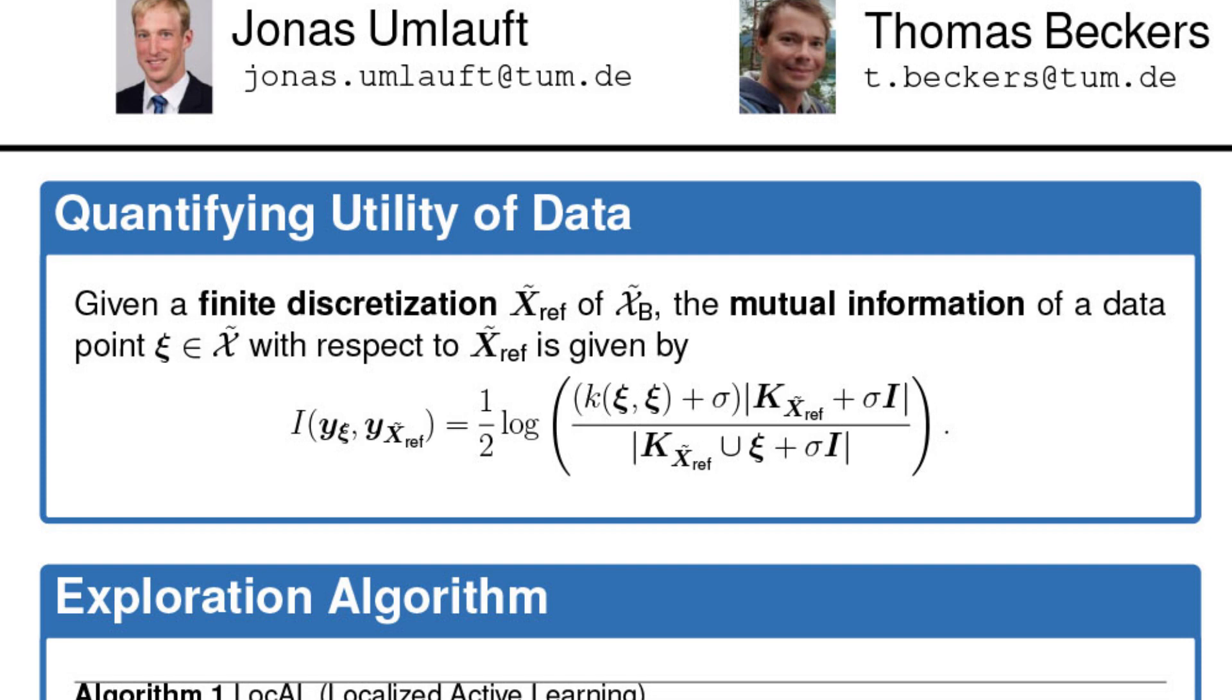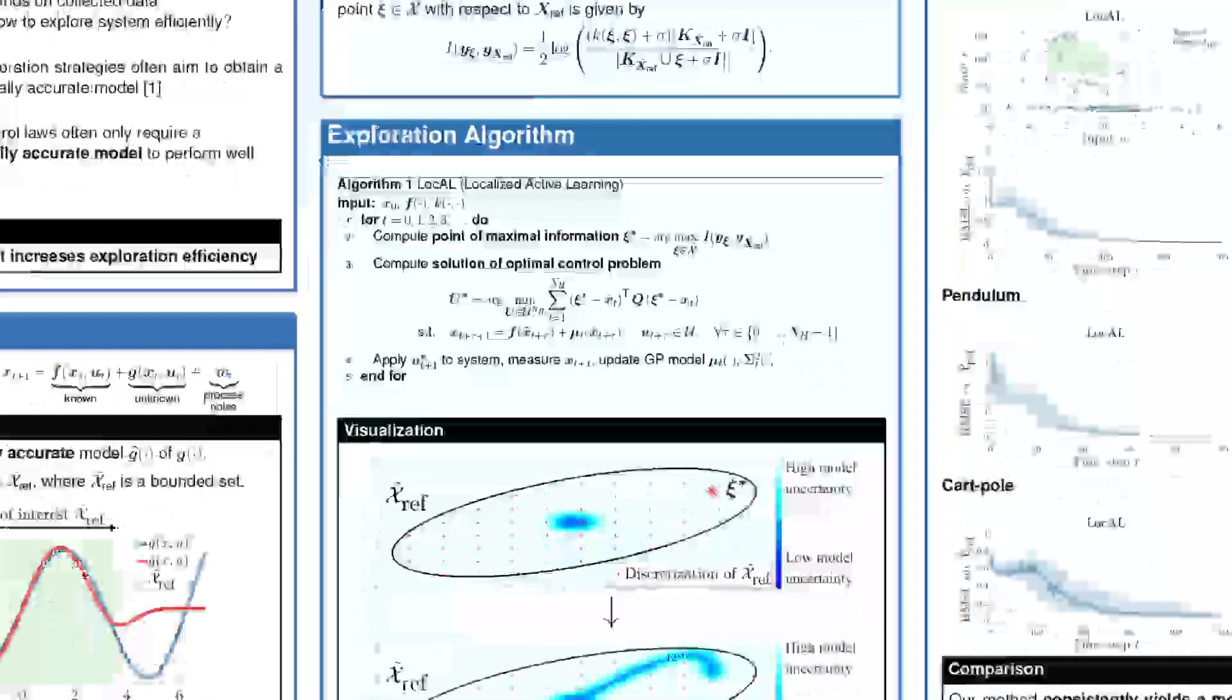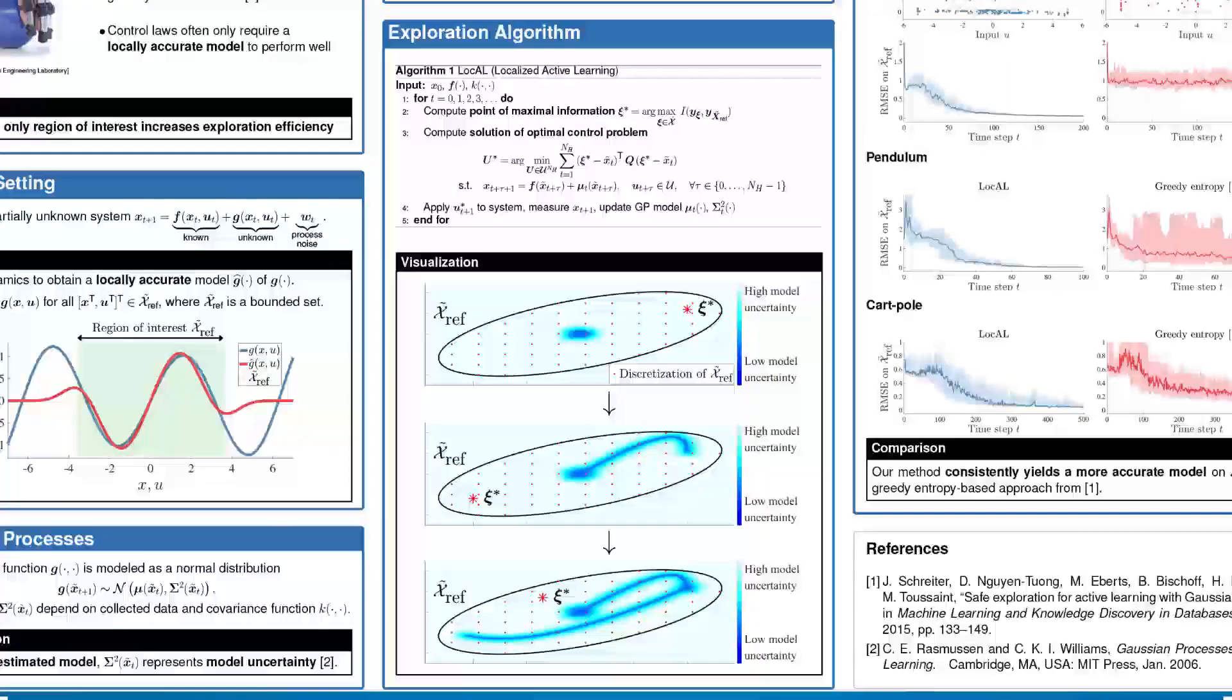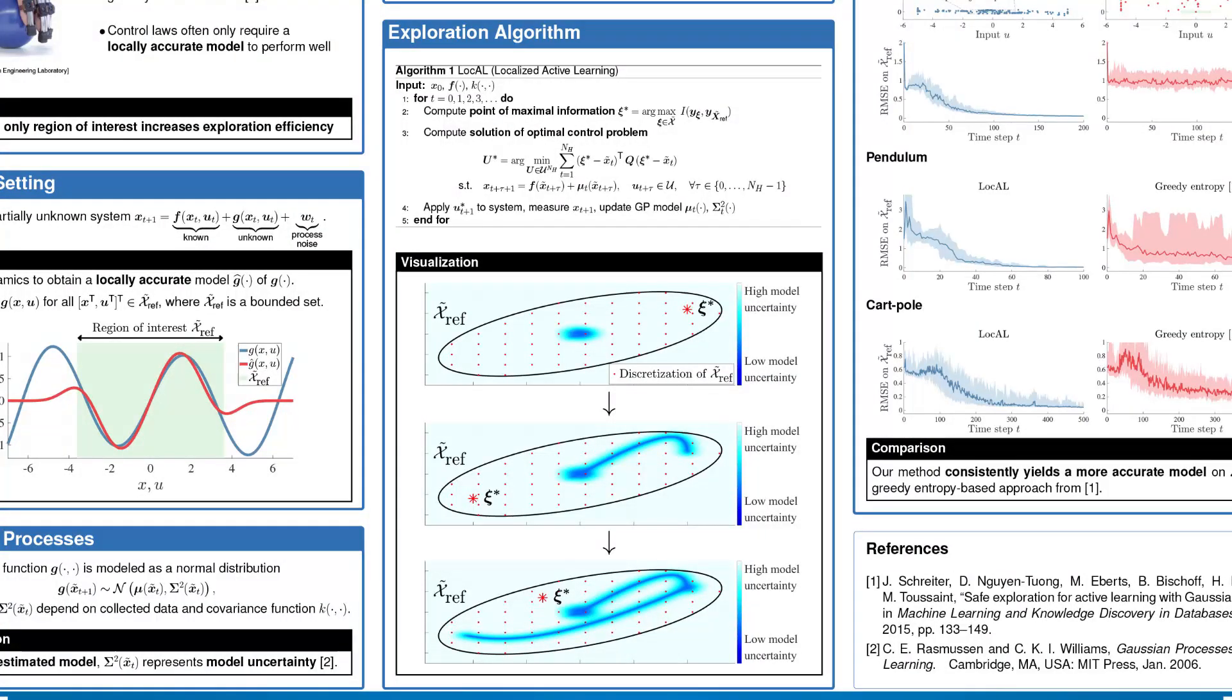We now describe the proposed exploration algorithm. At every time step, the point of maximal mutual information with respect to the discretized region of interest, denoted x*, is computed. A model predictive control law then computes the inputs that minimize the weighted distance to x*. A visualization of the proposed algorithm is shown here.